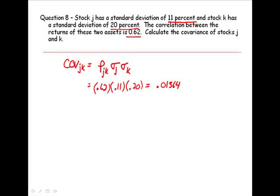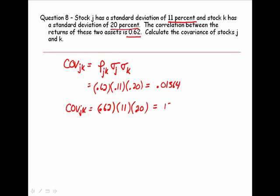Multiplying these variables gives us the covariance. An alternative way would be the following: our correlation is 0.62, the standard deviation of asset J is 11, the standard deviation of asset K is 20, and we get 136.4. I actually prefer this second method because it's less cumbersome — you don't have to deal with as many decimal places.